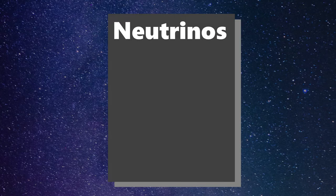Neutrinos are extremely light and small particles that only interact via the weak force and gravity. Neutrinos also have antiparticle partners. Neutrinos don't have charge, so their antiparticles don't have opposite charge like matter and antimatter. Instead, the difference between the neutrino and antineutrino is their chirality.